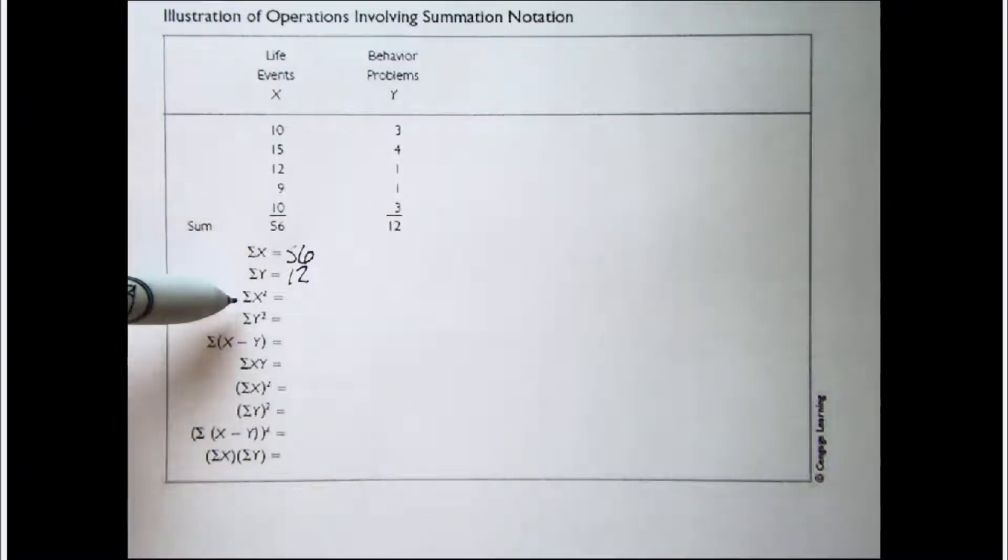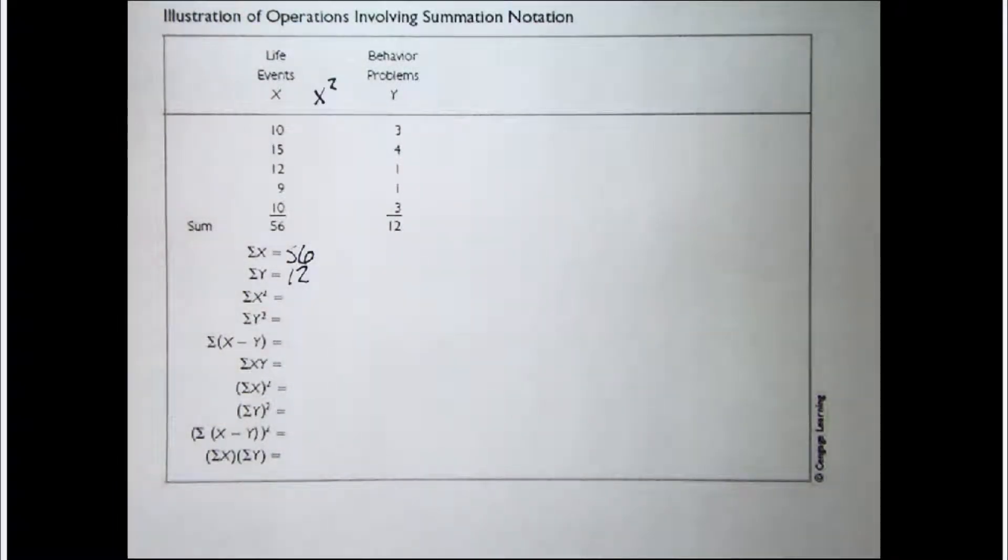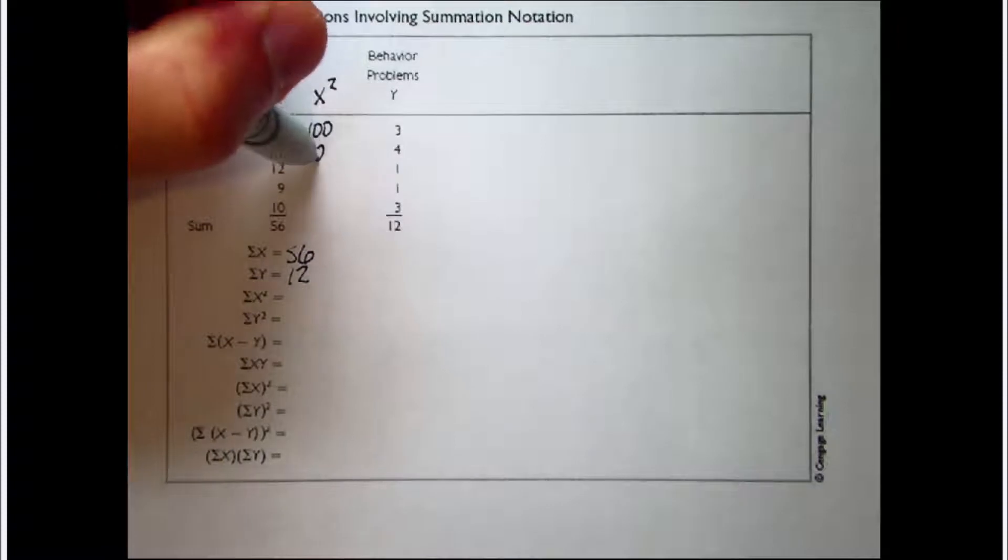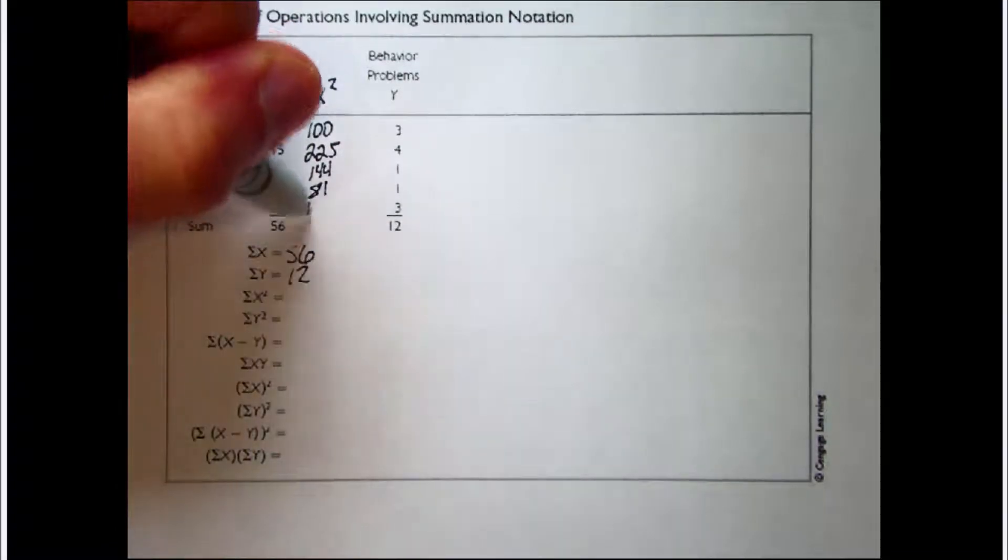This particular one right here is asking us for the sum of X squared. So we need to ask ourselves, sum up what? Well, we need to sum up all the squared X values. So here we have a column of X values. Let's create a column for squared X values. We take things one step at a time, so now let's take each one of those values and square them. 10 squared is 100, 15 squared is 225, 12 squared is 144, 9 squared is 81, 10 squared is 100.